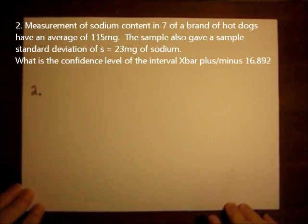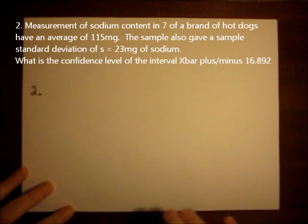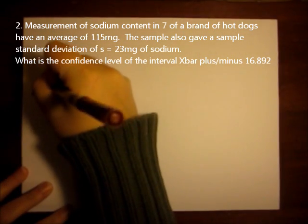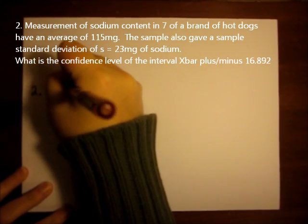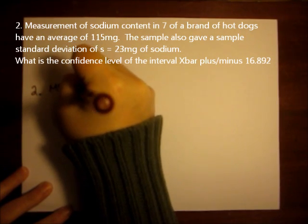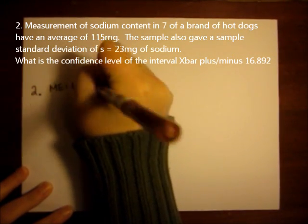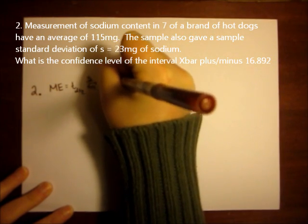Question 2 is asking us to go backwards. We're going to be using the same formula that we did for question 1, which is the margin of error equals t alpha over 2 times s over square root of n. And the degrees of freedom is n minus 1.